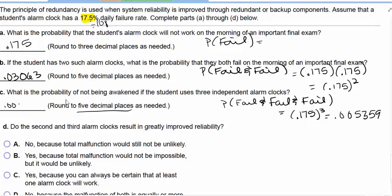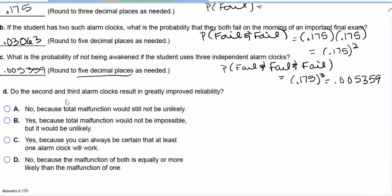The result is 0.00535. Notice it goes down drastically. Do the second and third alarm clocks result in greatly improved reliability? Yes, because it really goes down.